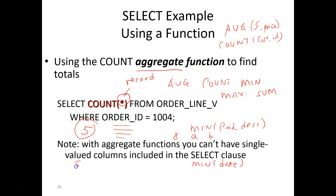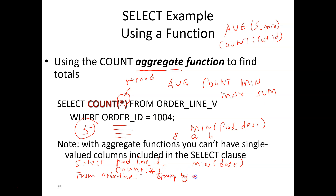Here is another example: SELECT product_line_id, COUNT(*) FROM the order_line table GROUP BY product_line. Let's say in the order line table you have two product lines — product line one and product line two — and five products from product line one were ordered and three from product line two. What you will get is product line one with five, and product line two with three, because everything is grouped by the product line.